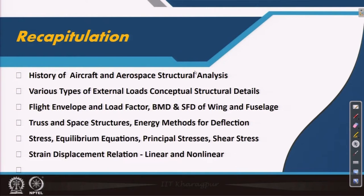The discussions on theory of elasticity and the type of problems we generally solve at this stage concern the linear part of strain. With that definition of linear strain — epsilon_ij equals half of (del u_i/del x_j + del u_j/del x_i) — we will come to that. But before that, let us go to the recapitulation slide, which helps a lot in understanding what we have already covered in the course.